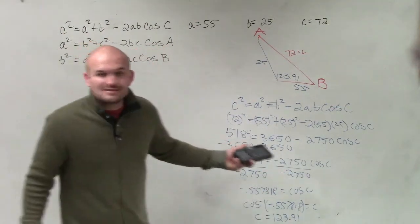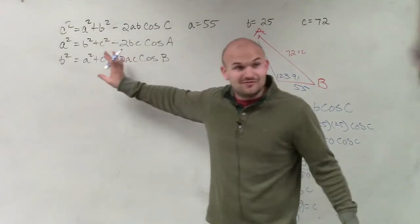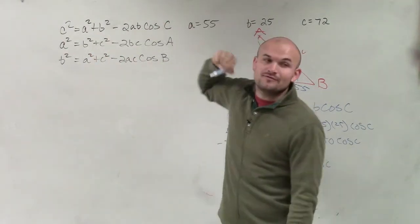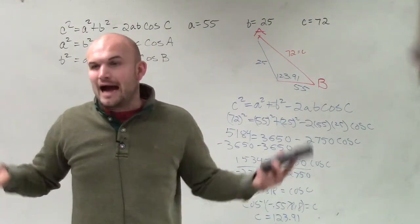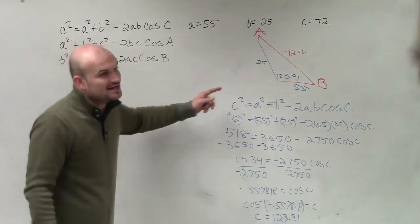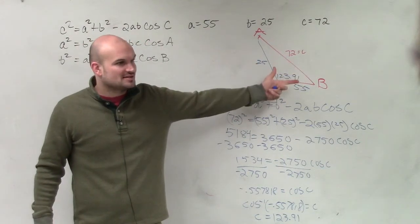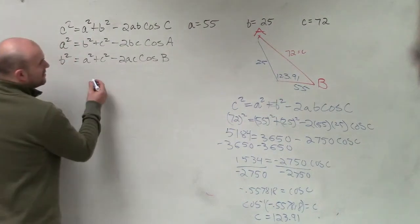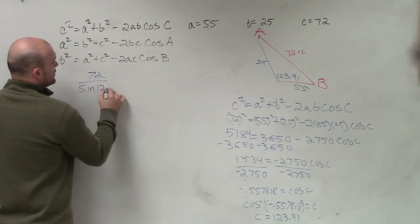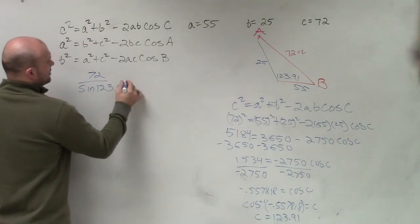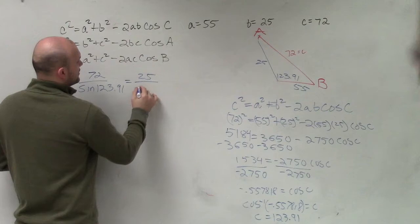So now we need to find the other angles. You can go back to the law of cosines if you want to. Since we did it for C, you can now do it for A and B. But to me, even though the law of cosines is not bad, I already have a ratio. And I know once I have a ratio, I just want to use the law of sines, right? It's much simpler. Now that I have a ratio, 72 over the sine of 123.91 is going to be the same as 25 over the sine of B.